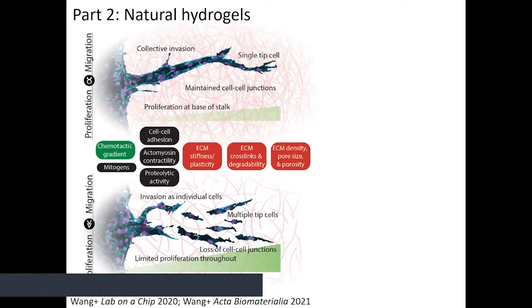We also tuned matrix mechanics and found that's part of it too — if the matrix is very dense, invasion is slower, requiring adjustment of soluble factors to achieve good vessels that invade through the material. Overall, focusing on the collectivity of these sprouts has been very helpful for thinking about material design criteria: we always want migration to occur, but we need materials that allow collaboration to get nice connectivity of vessel sprouts.